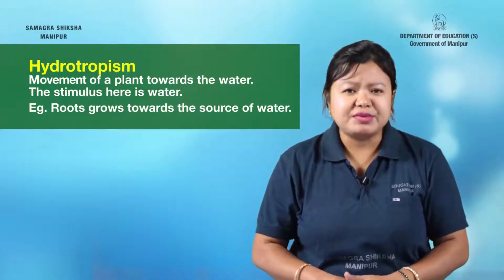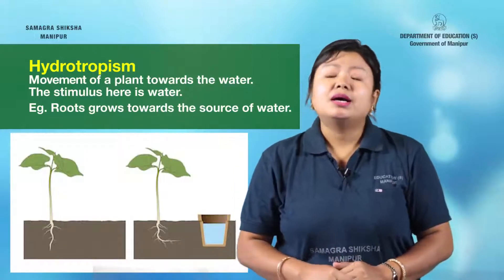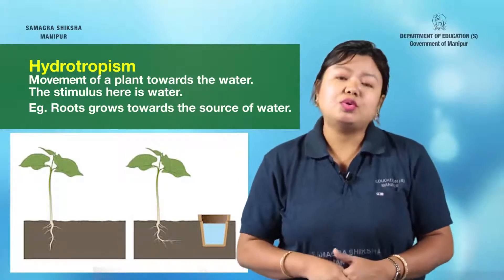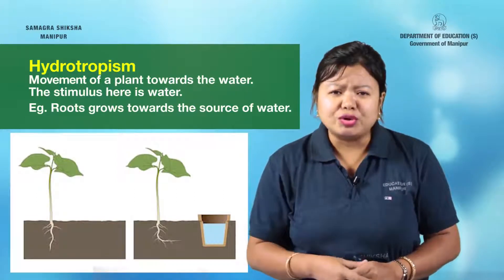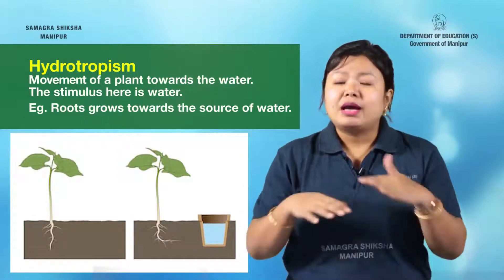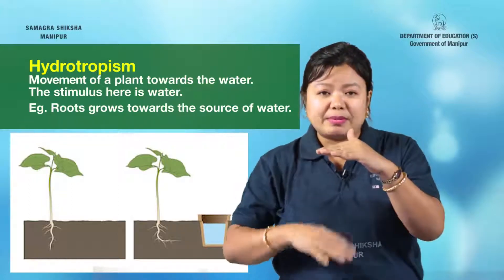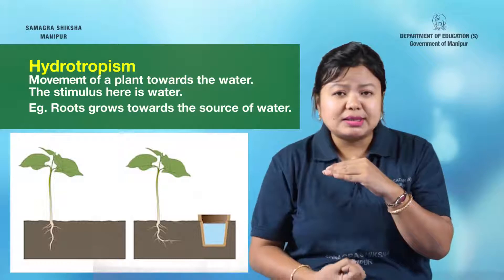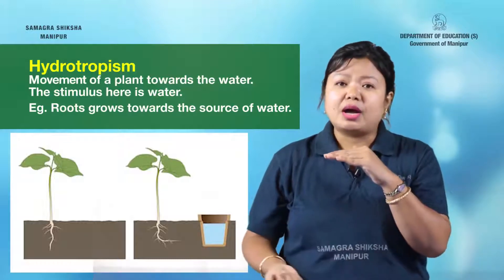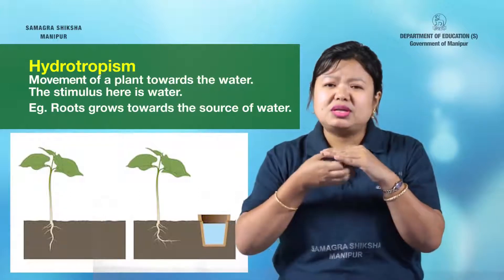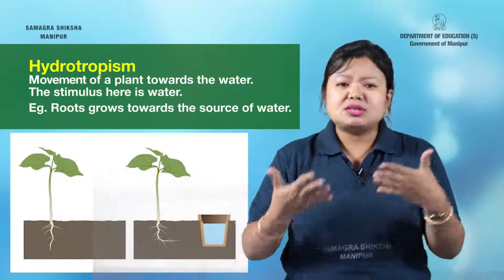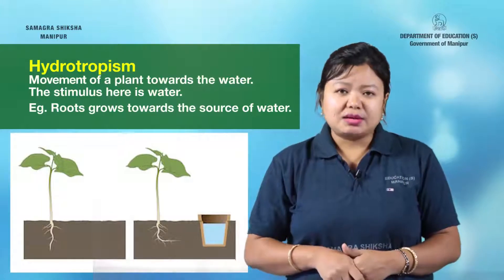The next tropic movement is hydrotropism. In hydrotropism, the roots grow towards the source of water. The roots are positively hydrotropic.